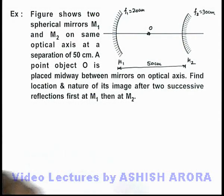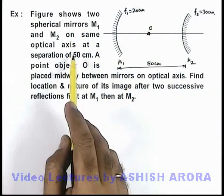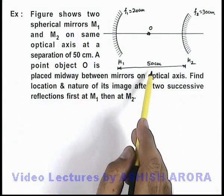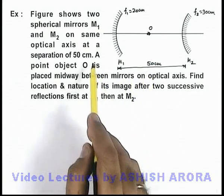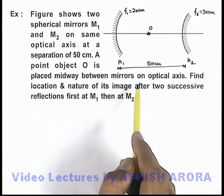In this example, figure shows two spherical mirrors M1 and M2 on the same optical axis at a separation of 50 centimeters. The point object O is placed midway between the mirrors on optical axis.